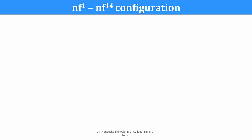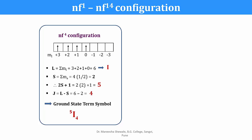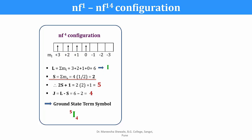For the F subshell, ML values run from +3 to −3. For the NF4 configuration, summation of ML = 3+2+1+0 = 6, represented by I. All four electrons have spin +½, so summation of MS = 2 and spin multiplicity 2S+1 = 5. The subshell is less than half filled, so J = L−S = 6−2 = 4. The ground state term symbol is 5I4.